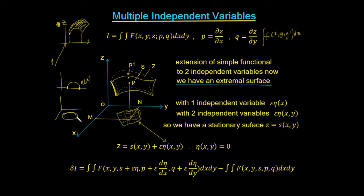The boundary of the surface is going to be zero all the way around, in the same sense that the boundary of our simple eta of x is zero at the two endpoints. We're going to have a small surface added on to the original extremal surface, giving us a second surface. So we have our epsilon eta(x,y), which is our family of surfaces — this is the thing we add on in order to generate the variation.